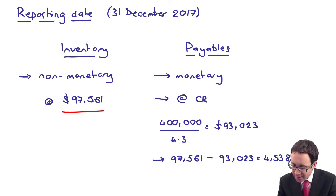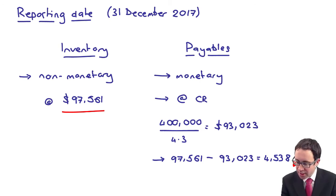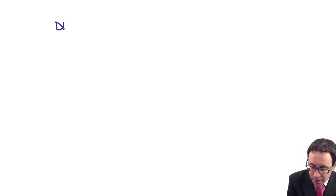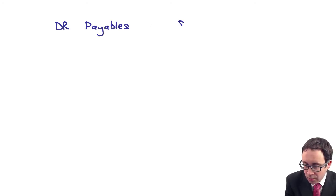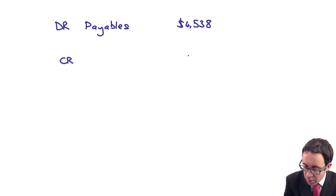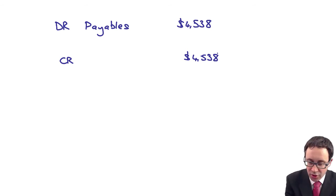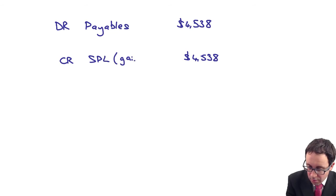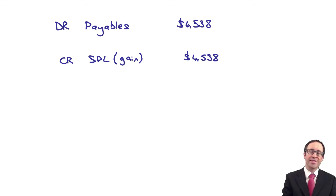That is a reduction in your payable. To process the journal entry for the reduction, we debit payables with $4,538 and credit $4,538 to the statement of profit or loss. That credit is a gain, and it goes within your operating costs, reducing your operating costs.